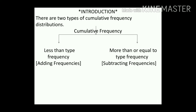The first type is less-than type frequency — in that, we add the frequencies. The second type is more-than-or-equal-to type frequency — in this type, we subtract the frequencies. So there are two types: less-than type and more-than-or-equal-to type cumulative frequency.